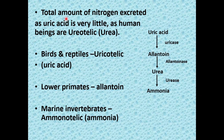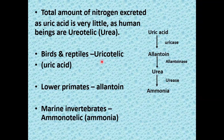The total amount of nitrogen excreted as uric acid is very little in humans, as human beings are ureotelic — meaning the major amount of nitrogen is excreted as urea. Birds and reptiles are uricotelic, excreting nitrogen as uric acid. Lower primates excrete nitrogen as allantoin, formed by the enzyme uricase from uric acid. Marine invertebrates are aminotelic, excreting nitrogen as ammonia.